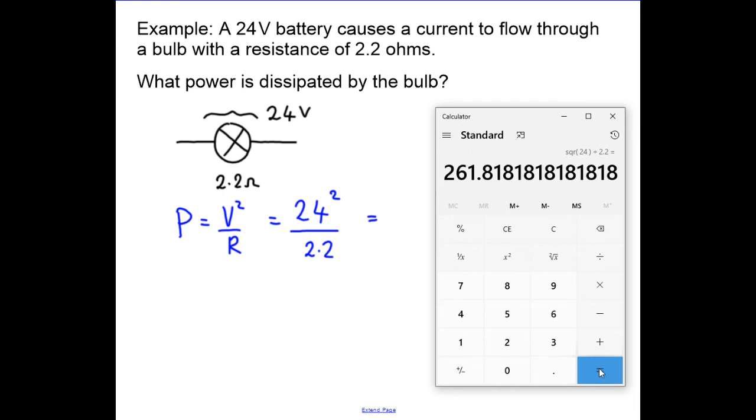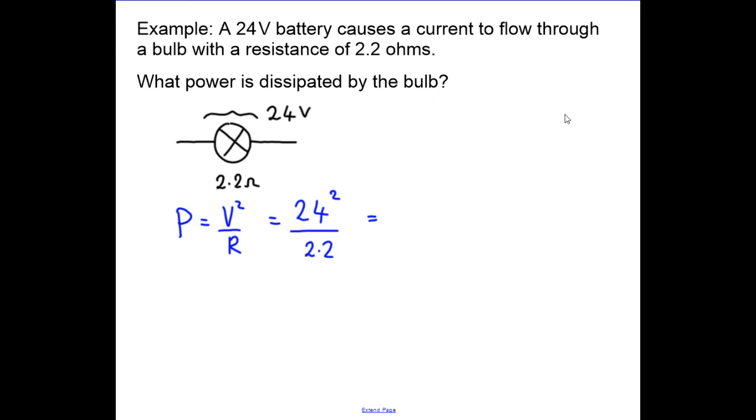That's 261.8, but we need to be careful about significant figures. We'll call it 260 watts because the resistance and voltage are only to two significant figures. So the bulb is a 260-watt bulb, and that's how you use the power equations.